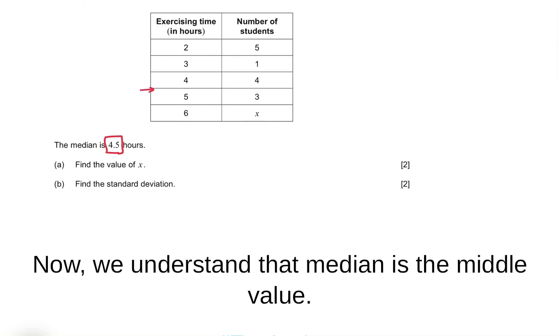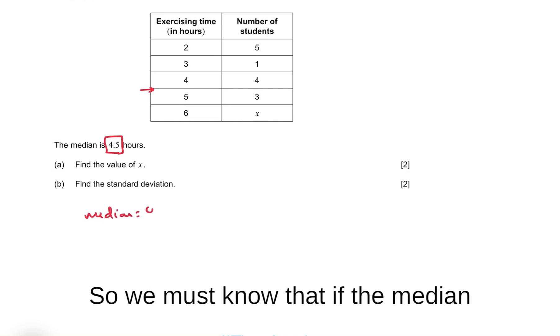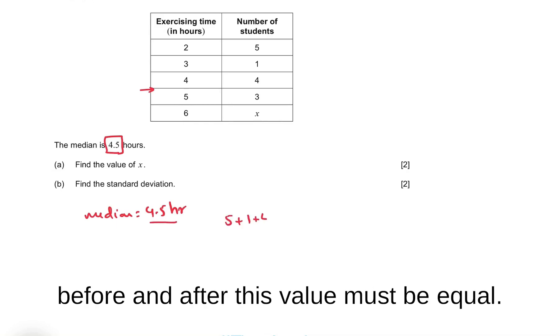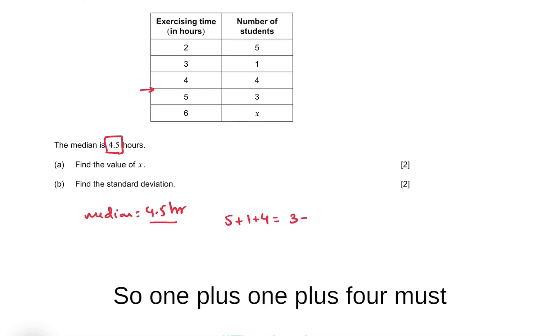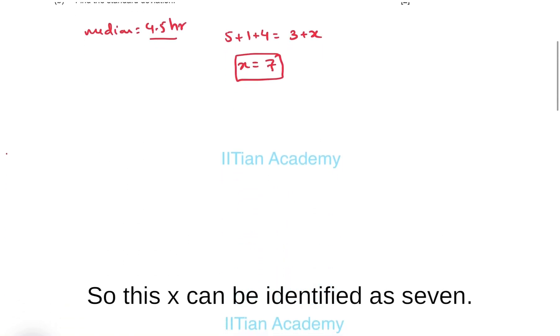We understand that median is the middle value, lying somewhere here. The median is 4.5 hours, so the number of students before and after this value must be equal. So one plus one plus four must equal three plus x, therefore x equals seven.